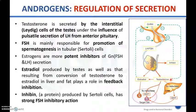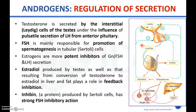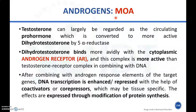Excess testosterone in the body also exerts negative inhibitory feedback on FSH as well as GnRH in the hypothalamus. If there is sufficient testosterone, it will inhibit the secretion of GnRH in the hypothalamus and inhibit the secretion of FSH and LH from the anterior pituitary. This is the regulation of release of natural androgens.